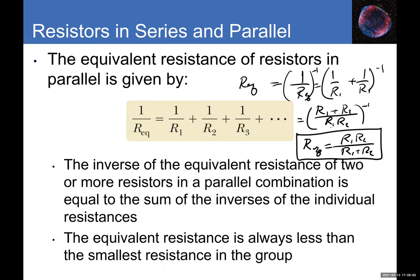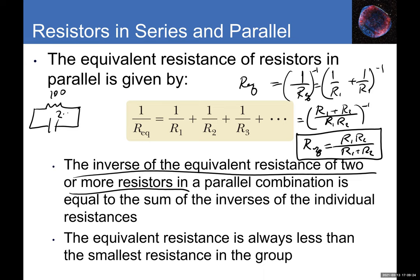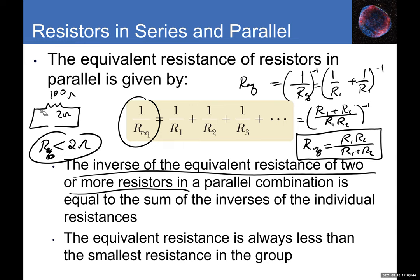The equivalent resistance of resistors in parallel is always less than the smallest individual resistance. For instance, if you have 100 ohms and 2 ohms in parallel, the equivalent must be less than 2 ohms. Parallel resistors follow the same equation format as capacitors in series, and series resistors follow the same format as capacitors in parallel.